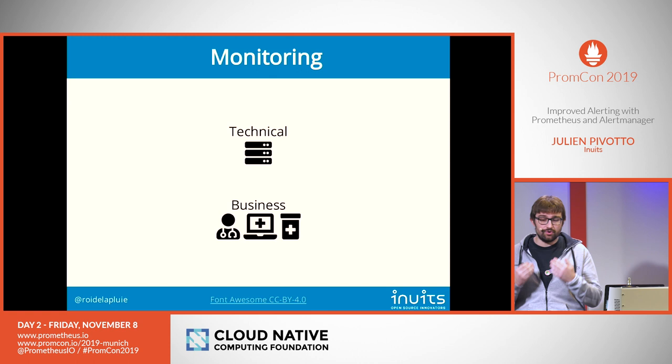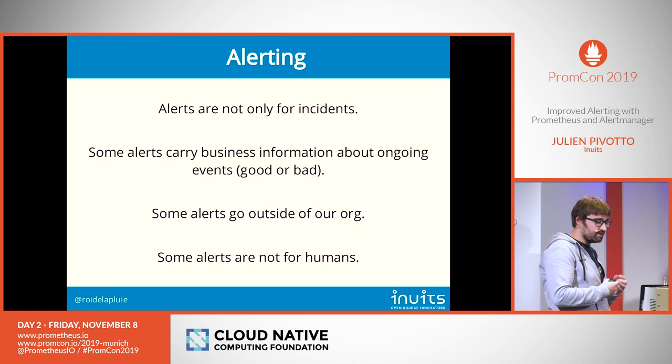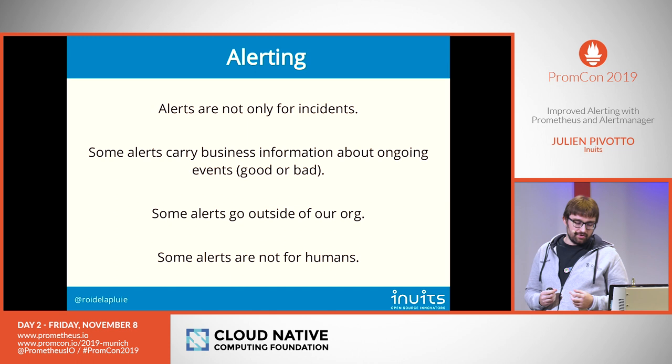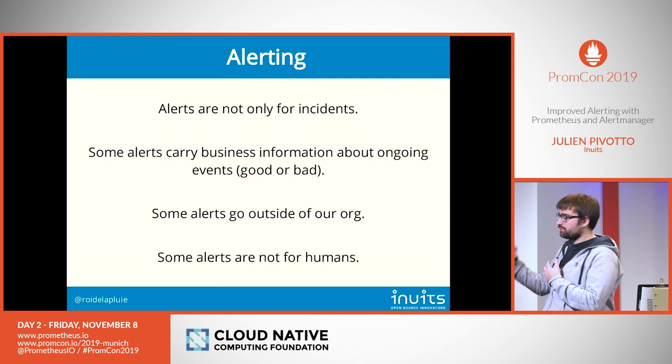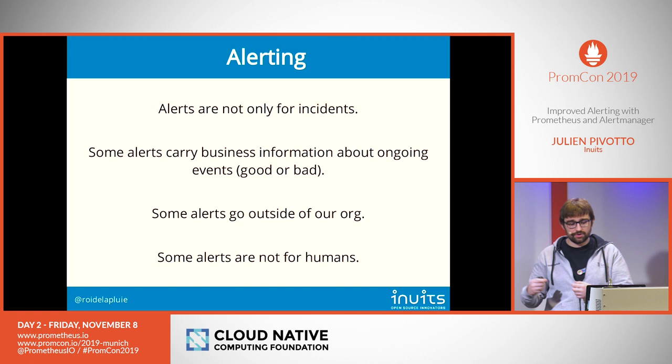When we speak about alerting in this talk, we are not only alerting for incidents. PromQL and business monitoring means we know a lot more than just incidents. We use it to provide information to our customers when there is an ongoing event, whether it's in our platform or in other platforms. We also send alerts outside of our organization to partners, saying something is not correct.